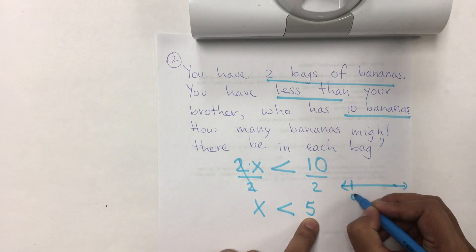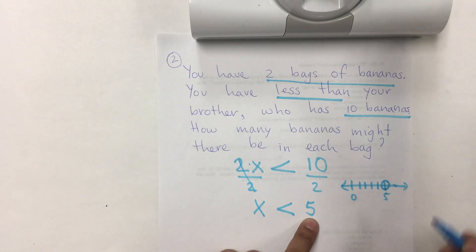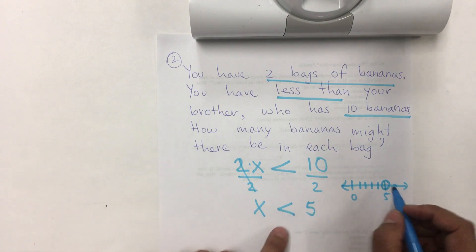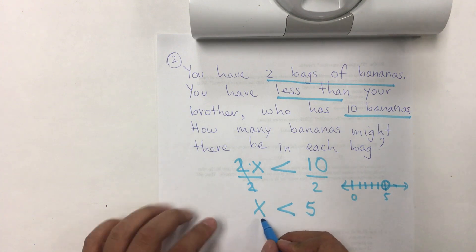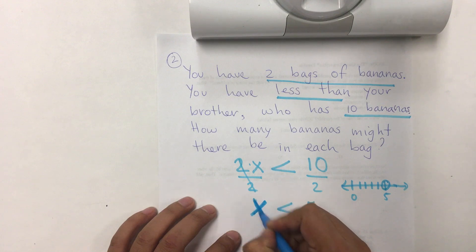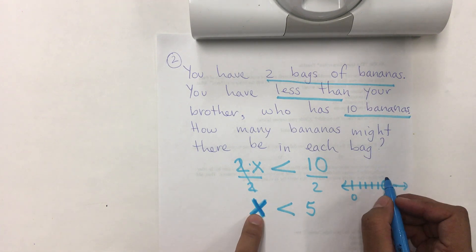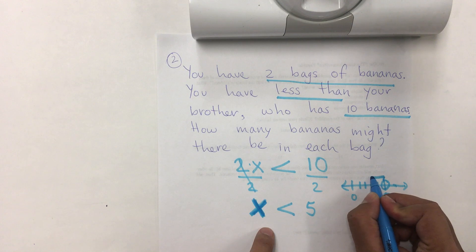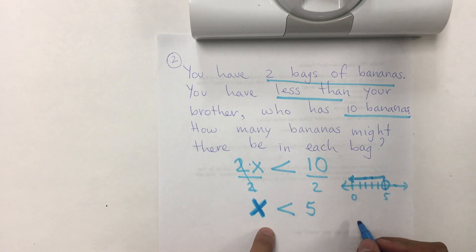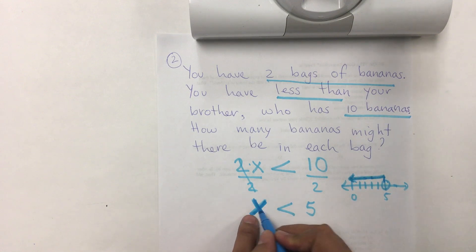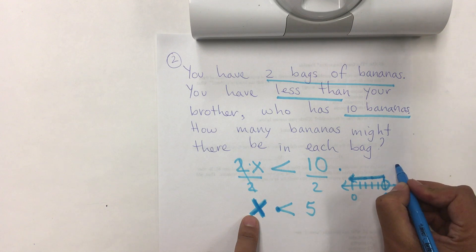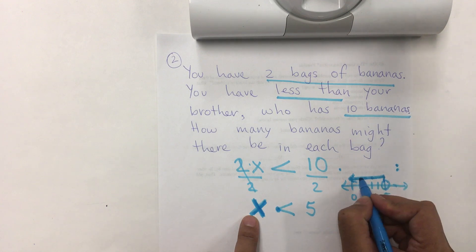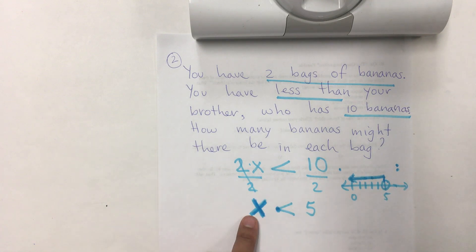We're going to graph it. We put zero, one, two, three, four, five. That's where our circle is going to be placed. And again, we're going to do the arrow. We don't have an equal sign, so we don't include five. It's less than five, not including five. So, the arrow represents my variable X, meaning the bananas inside of each bag. And it says that it's less than five. So, it has either four, three, two, one, et cetera. So, it's going to go to the left because it's less.